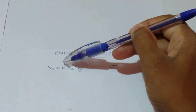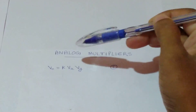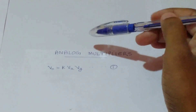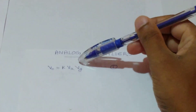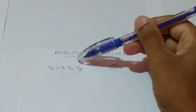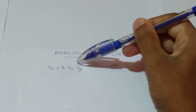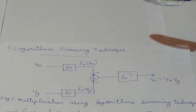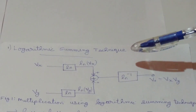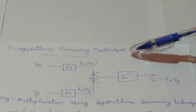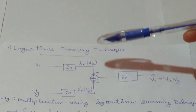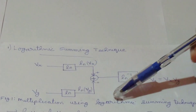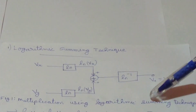There are various methods available for performing analog multiplication. Here we are going to consider three of such methods. First, consider the logarithmic summing technique. This is the arrangement for multiplication using the logarithmic summing technique.